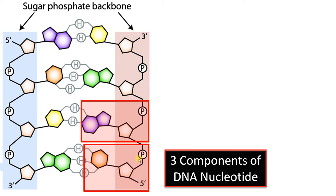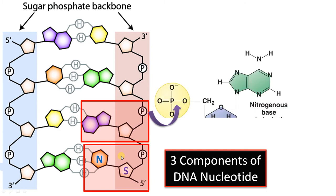Each nucleotide consists of a phosphate, a sugar, and a nitrogenous base. Let us zoom in for better understanding.